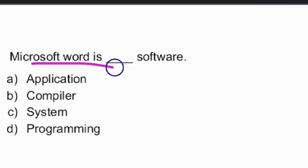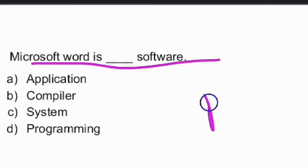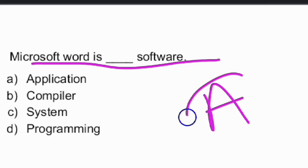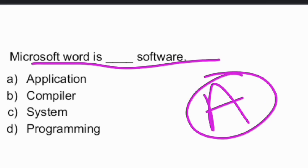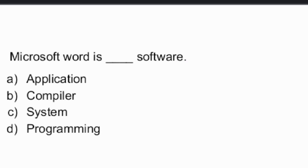Next question: MS Word is what type of software? MS Word is nothing but application software — option A is the right answer.